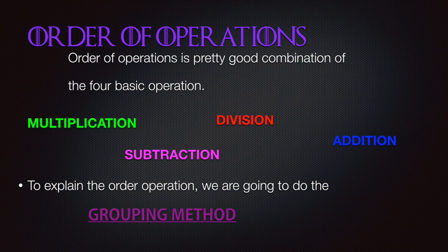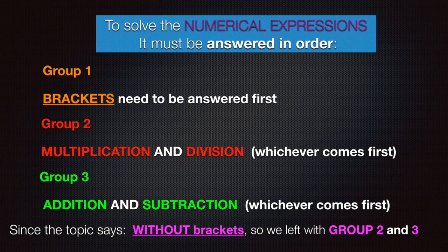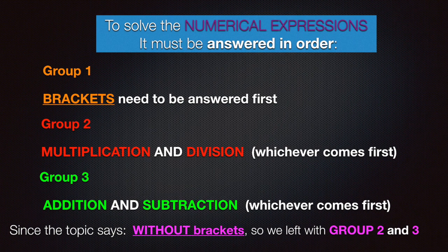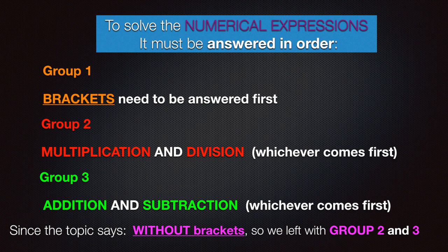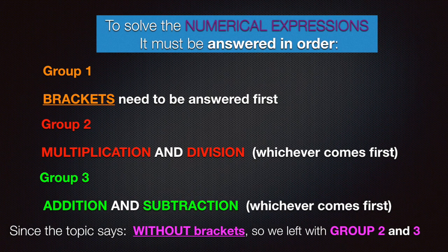Order of operations is a combination of the four basic operations: multiplication, division, addition and subtraction. To explain the order of operations, we are going to use the grouping method. There are three groups. Group one is the brackets. Group two includes multiplication and division, while addition and subtraction are group three. To solve the numerical expression, it must be answered in order. Group one needs to be answered first, then followed by whichever comes first in group two. Finally, the answer can be added or subtracted. Since our topic is without brackets, we are left with group two and three.